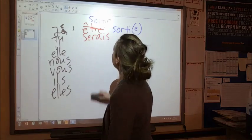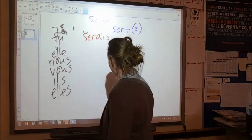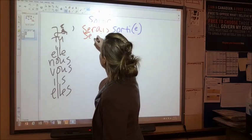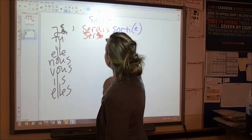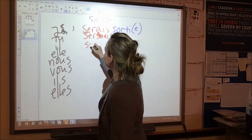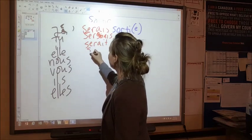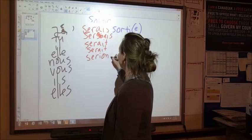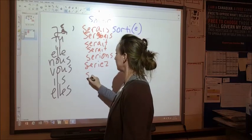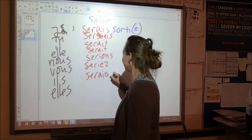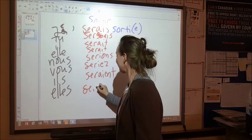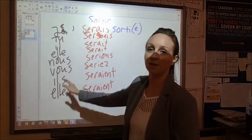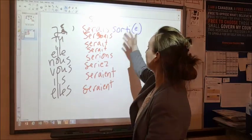So then you would conjugate être in the conditional all the way down. So let me just do this with you now, just so you can see what it looks like. Je serais, tu serais, il serait, elle serait, nous serions, vous seriez, ils seraient, elles seraient. And then this part is now correct. Now we just have to finish putting in sortie.